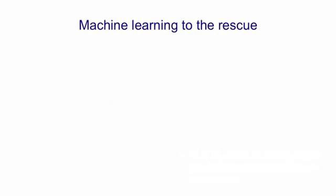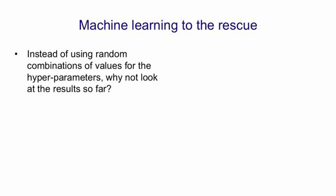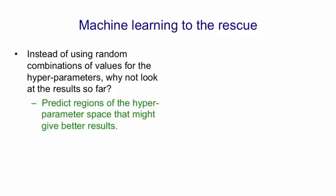There's something we can do that's much better than random combinations: basically it amounts to using machine learning to simulate the graduate student who is trying to decide what the hyperparameters should be. Instead of using random combinations, we look at the results we've got so far and try to predict what combinations are likely to work well — that is, we predict regions of the hyperparameter space in which we expect to get good results.